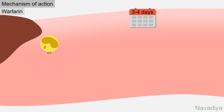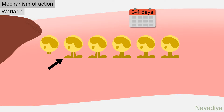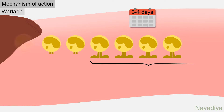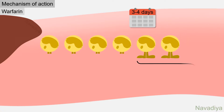This anticoagulant effect of warfarin develops after 3 to 4 days of starting therapy. That is because, although newly synthesized clotting factors are defective, factors that were already synthesized are fully functional. They stay in blood for a few days and contribute to coagulation. As these factors are degraded and replaced by defective ones, the effect of warfarin appears.